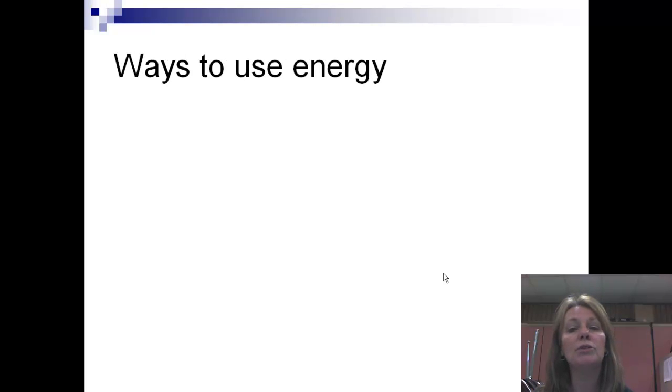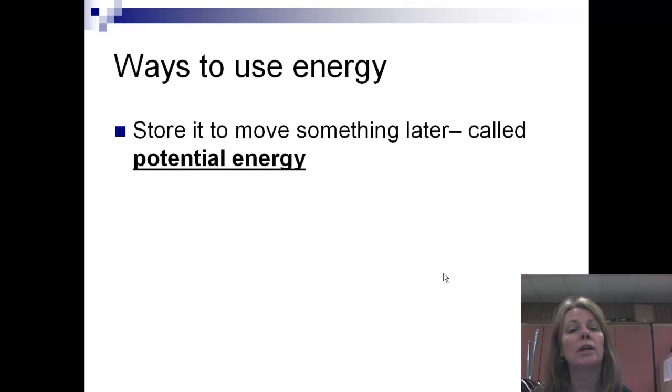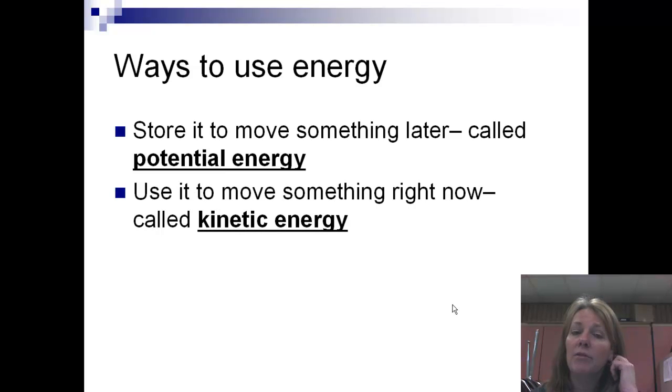And now the ways that we use those five types of energy are either we're going to store that energy and use it to move something later. And we call that potential energy. That's under question number seven on your handout down there. What are the two ways energy is used? So again, store it, we call that potential energy. And that means I'm not going to move anything right now, I'm just going to have that energy ready and available for me to use it later. And the second type of way to use energy is kinetic energy. And that's if I am moving and using that energy right now to get something done, I use kinetic energy or use energy in the way of kinetic energy.